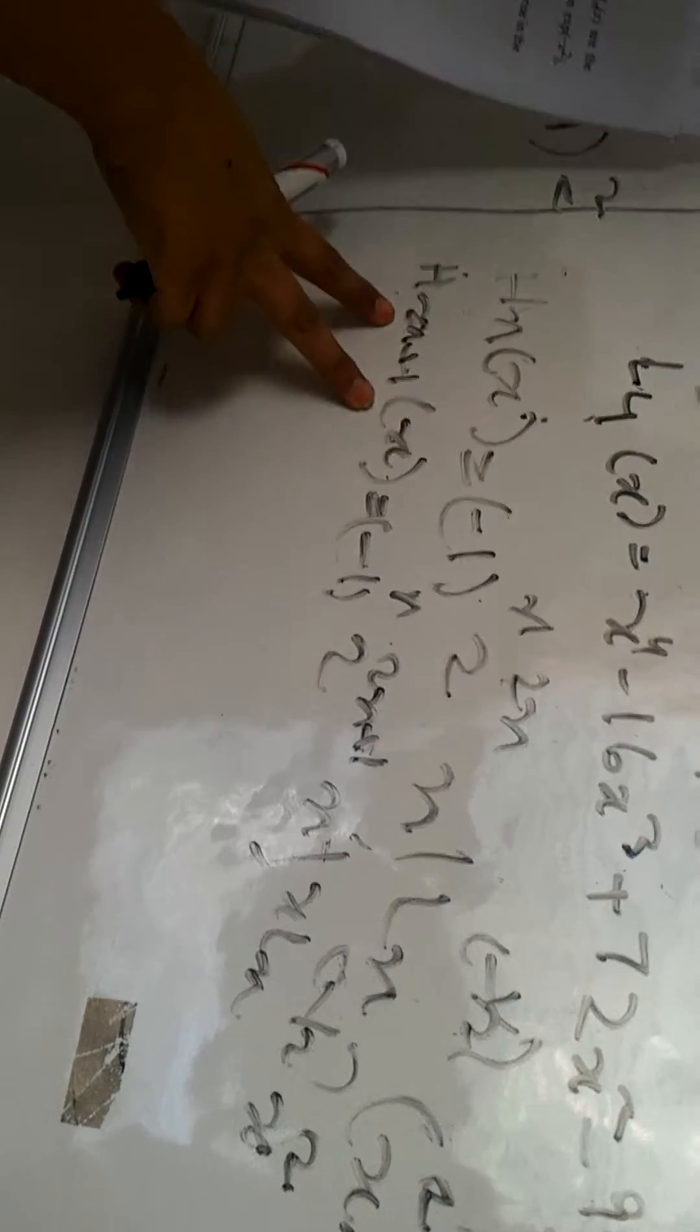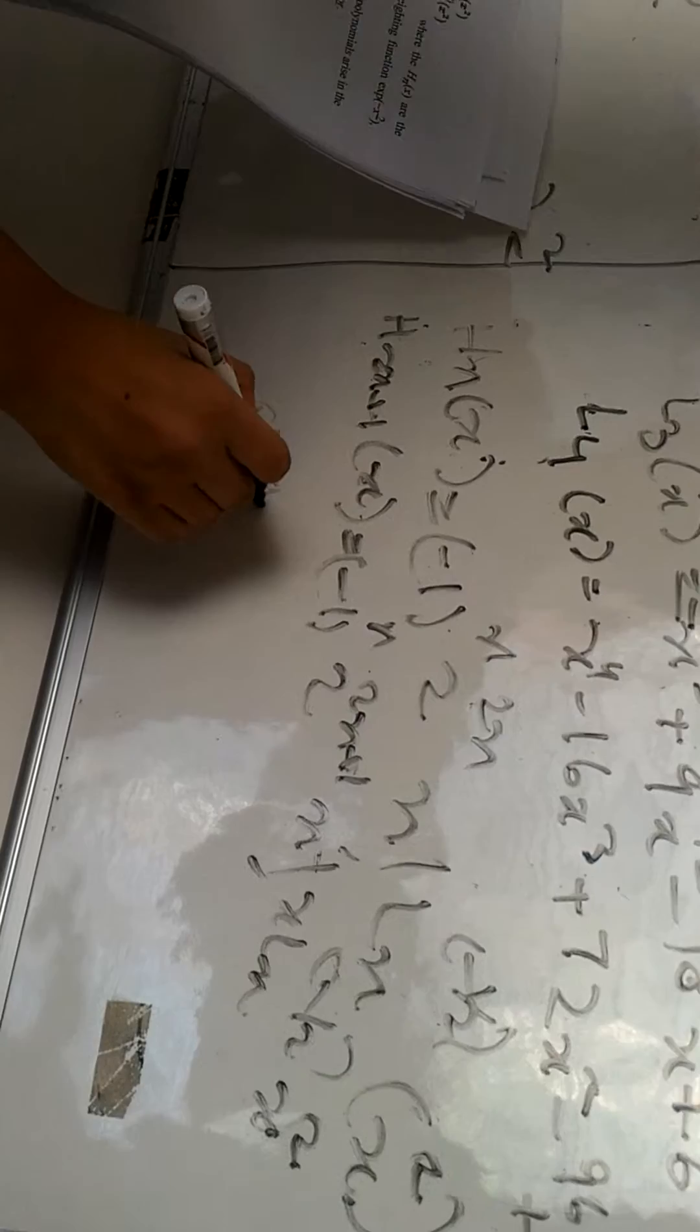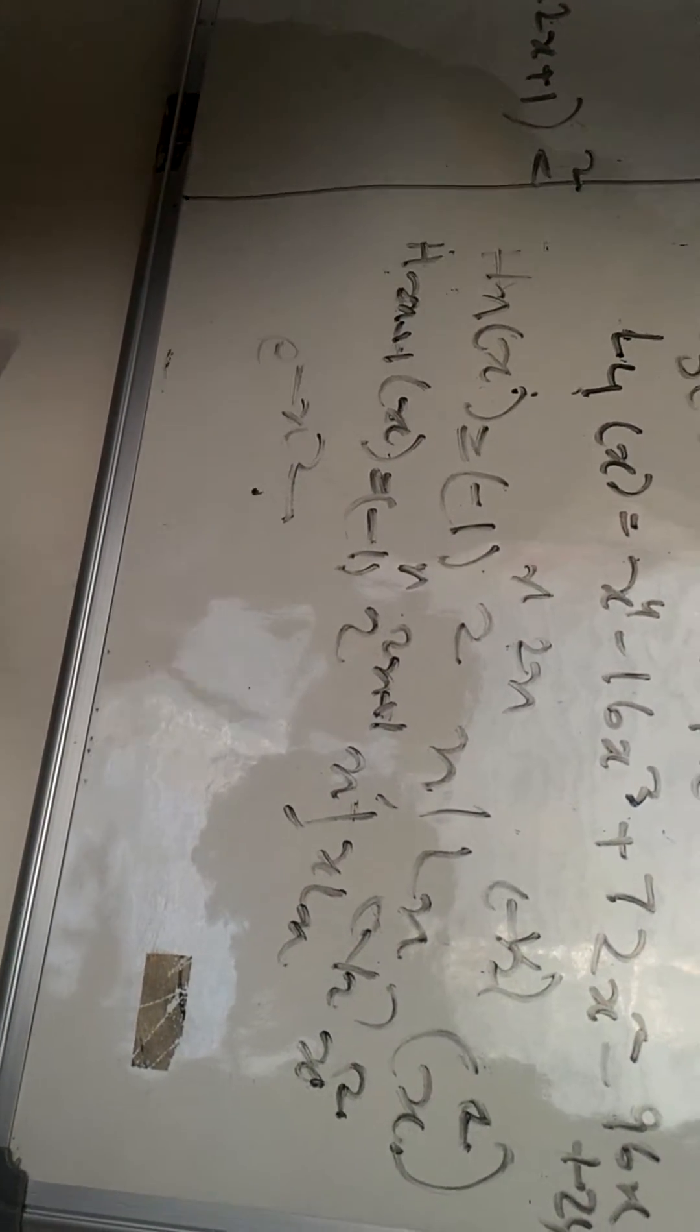These two are Hermite polynomials based on the weighting function e^(-x²). And because of this relation, these generalized Laguerre polynomials arise in the treatment of quantum harmonic oscillators. Thanks.